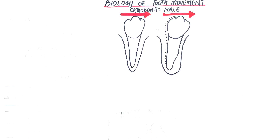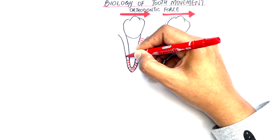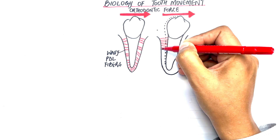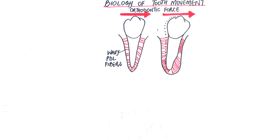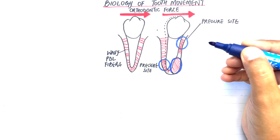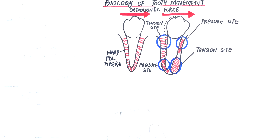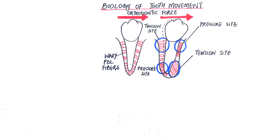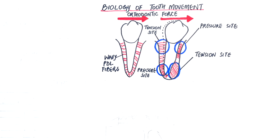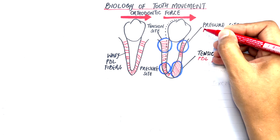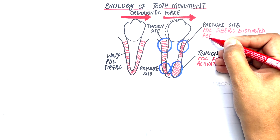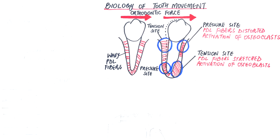The PDL fibers are wavy in nature. After the application of orthodontic forces, regardless of the nature of the force, two areas of pressure and tension are created in the PDL space of a tooth. The wavy nature allows the PDL to stretch on the tension side and distort on the pressure side, resulting in the activation of osteoblasts on the tension side and osteoclasts on the pressure side, so that remodeling of the bone can be done through a series of events.